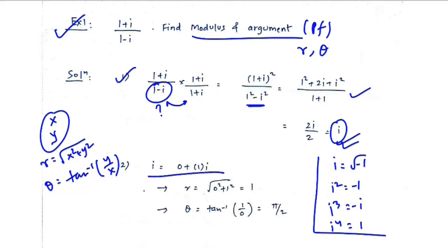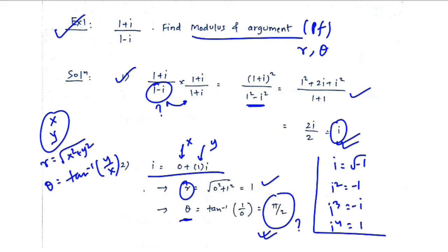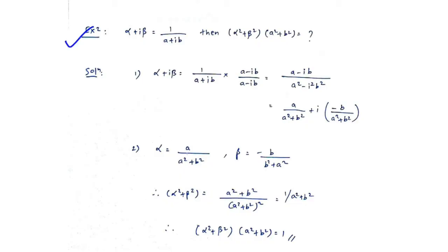The result i can be written as 0 plus 1 times i, so x = 0 and y = 1. Then r = √(x²+y²) = 1, and theta = tan⁻¹(y/x) = pi/2. The answer is pi/2 because both x and y are positive, placing us in the first quadrant. Homework: if x is positive and y is negative — for example, 0 minus i — what is the argument? Comment your answer.